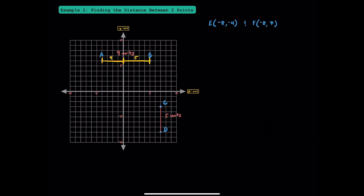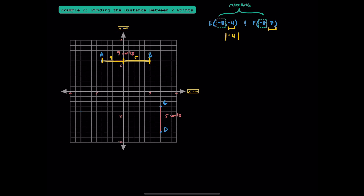Now it's your turn — try finding the distance between points E and F. First, notice that we have matching x-values. If that's the case, we focus on the y-values. Since they're on different sides of 0, we add their absolute values together. The absolute value of negative 4 is positive 4, and the absolute value of 7 is positive 7. Adding 4 plus 7 together, we get 11. Points E and F are 11 units apart.